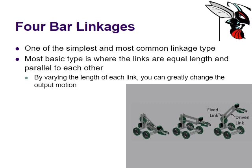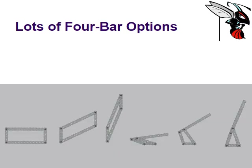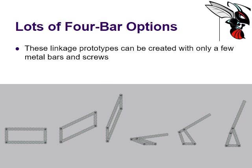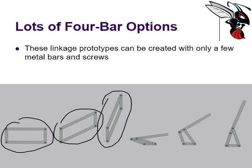The most common linkage for our robotic systems is the four-bar linkage — one of the simplest and most common types. It uses links that are equal in length and parallel to each other. By varying the orientation, you can move from a down position to straight out to a raised position reaching quite high. There are many different four-bar configurations, and you can see how each moves and changes based on the linkage geometry.